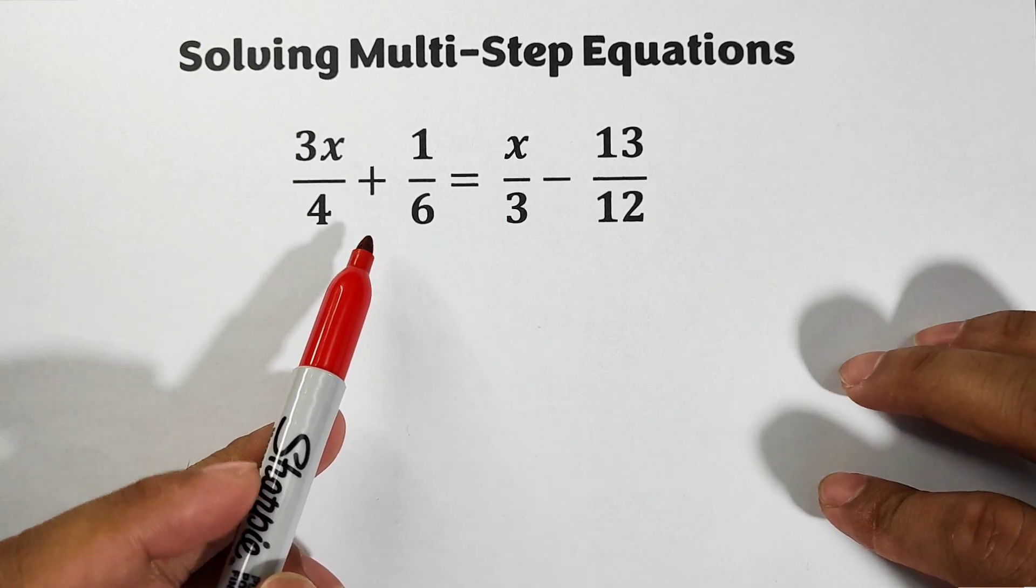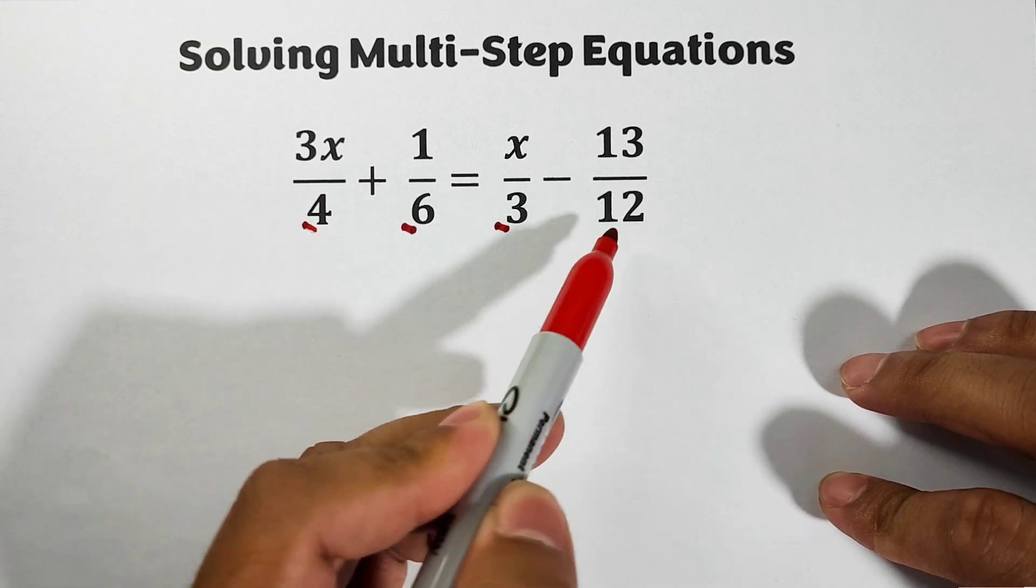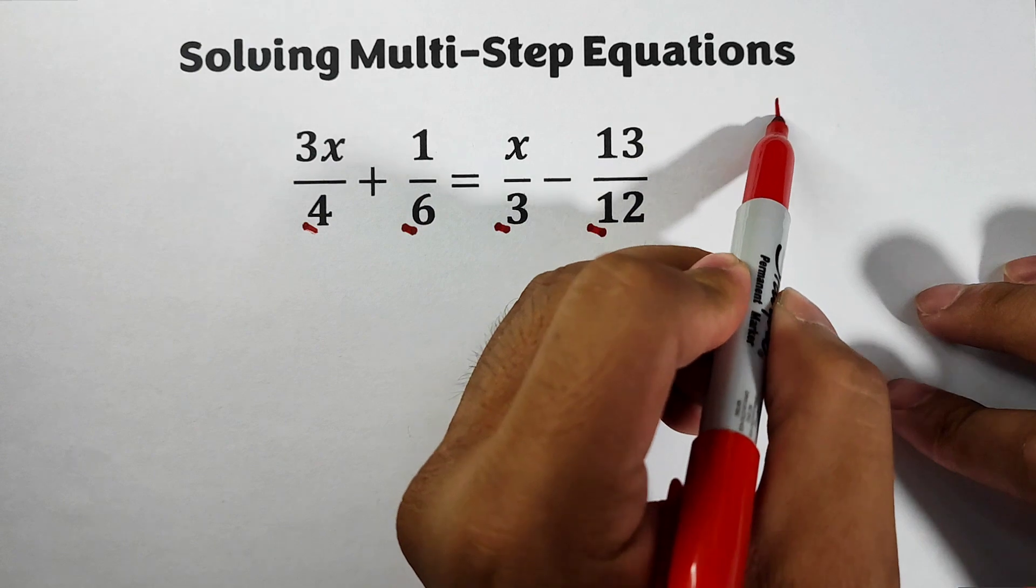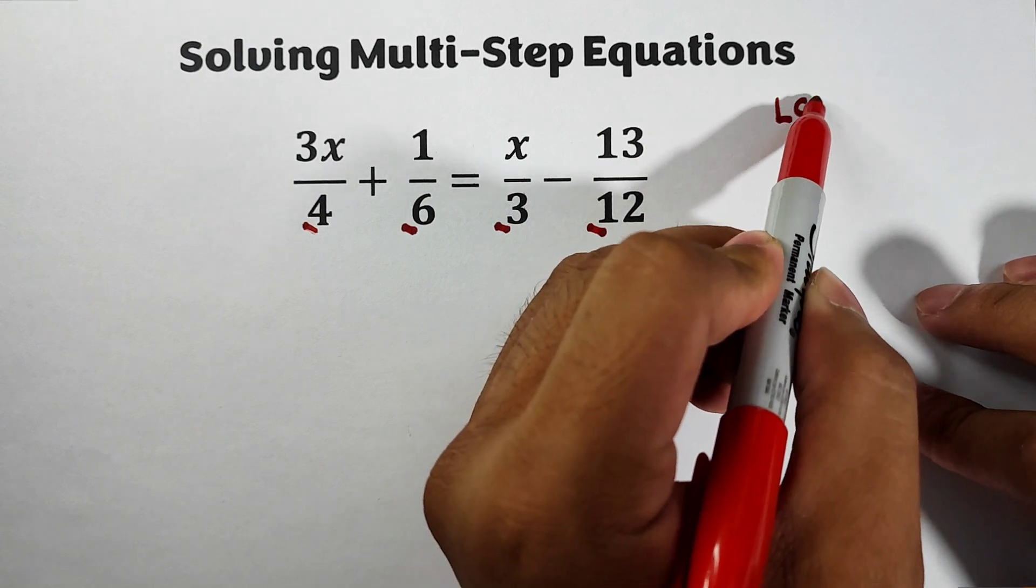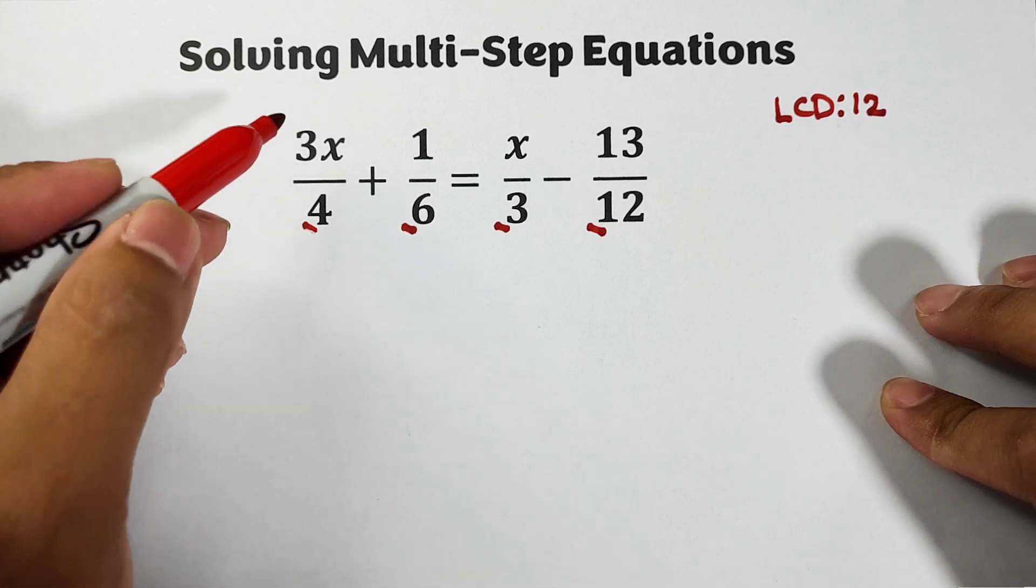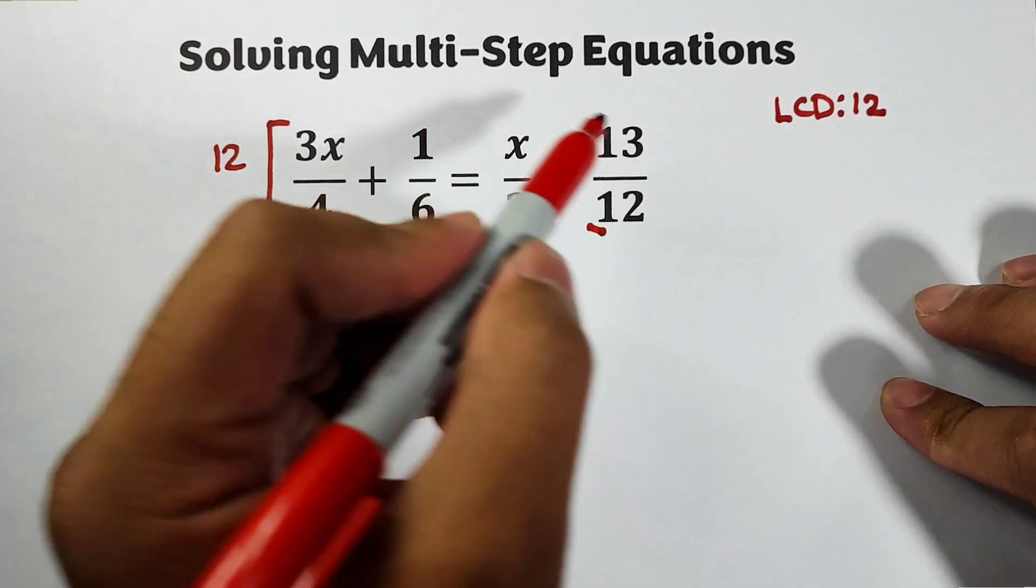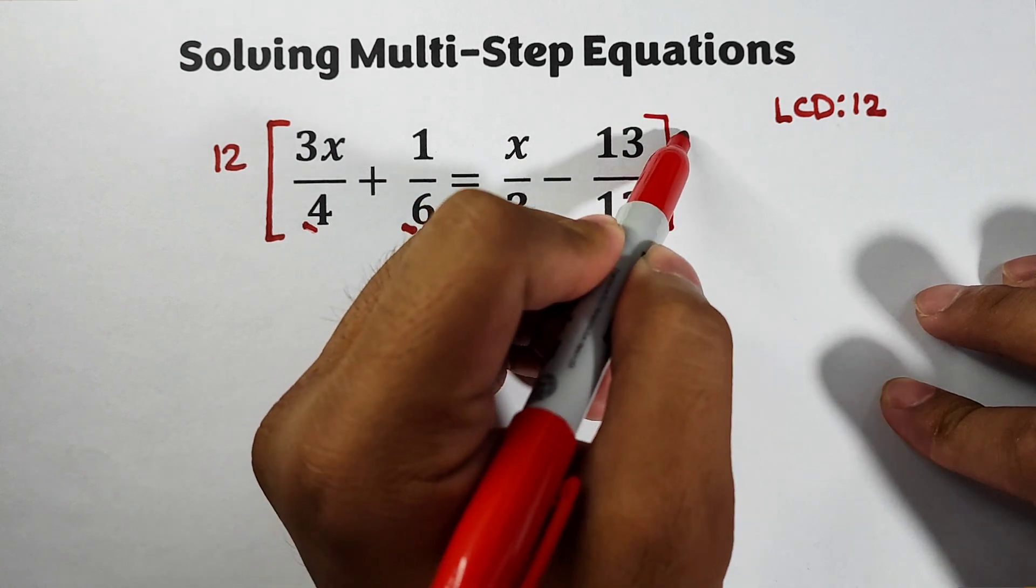We have 4, 6, 3, and 12. And as you can see, the LCD must be equal to 12. So you will multiply the whole equation by 12. Multiply this by 12.